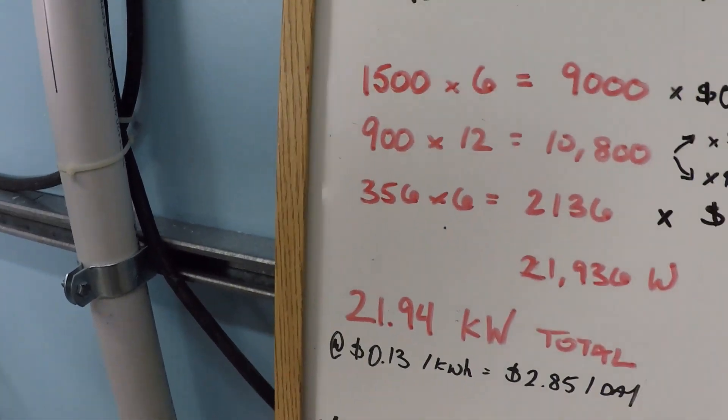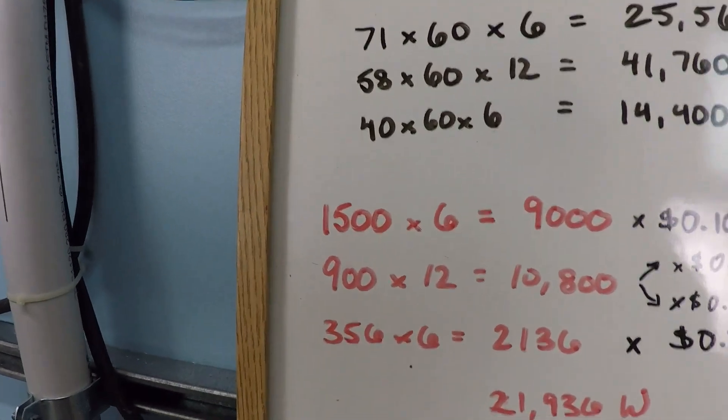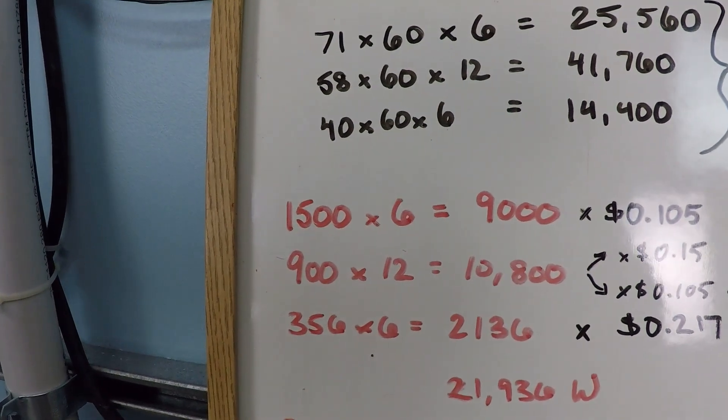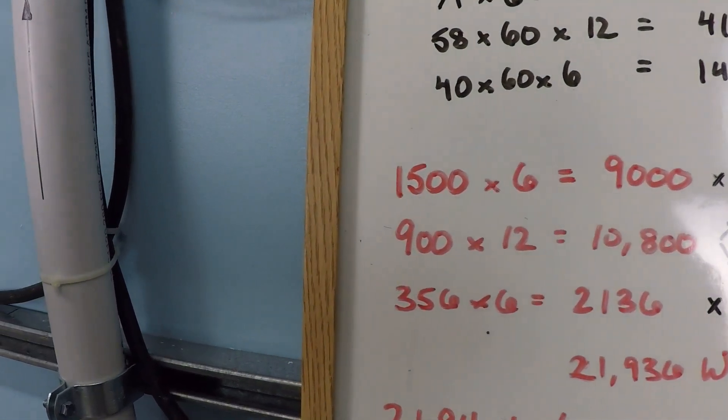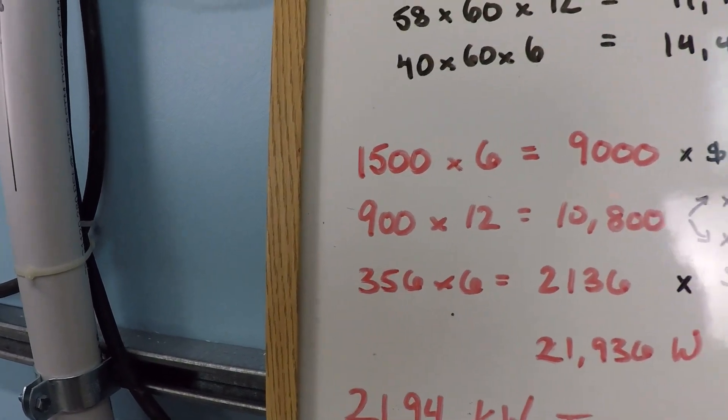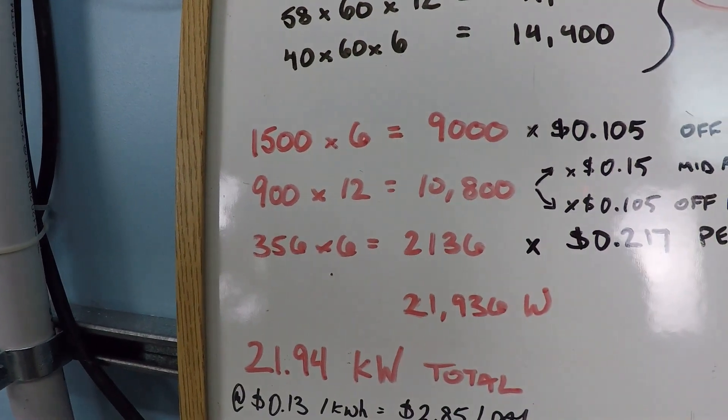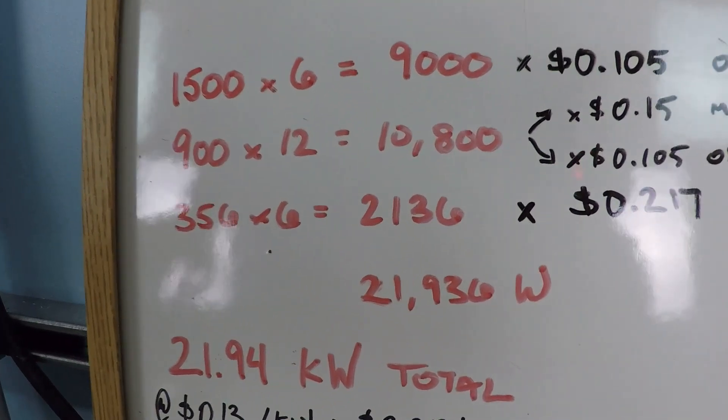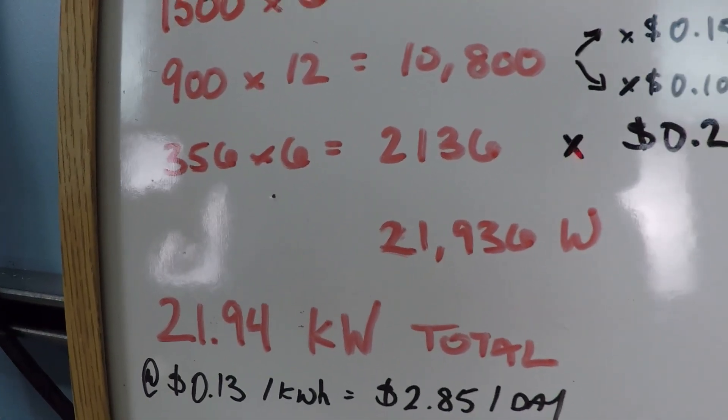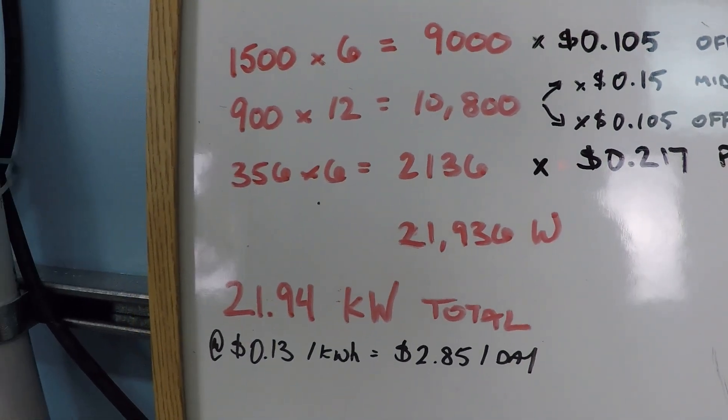So when it comes to the power consumption here, you can see that 1500 watts for six hours is 9,000 watts, 900 watts times 12 hours for 10,800, and 356 watts for six hours. And the grand total is 21,936 watts or 21.94 kilowatts.